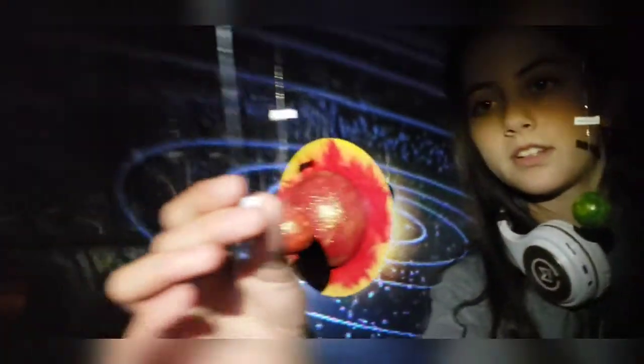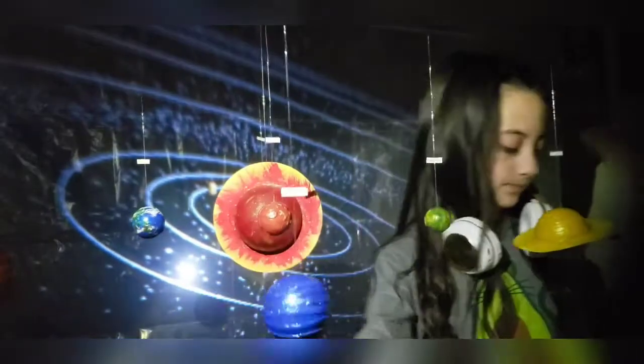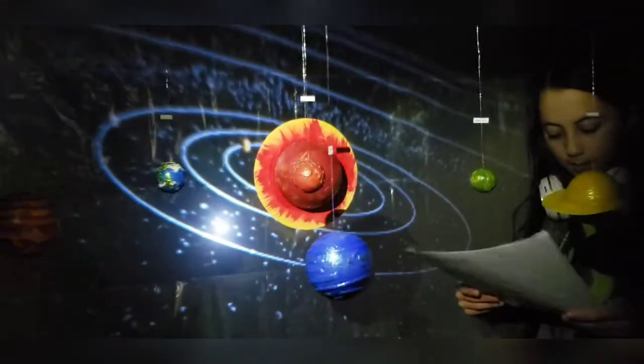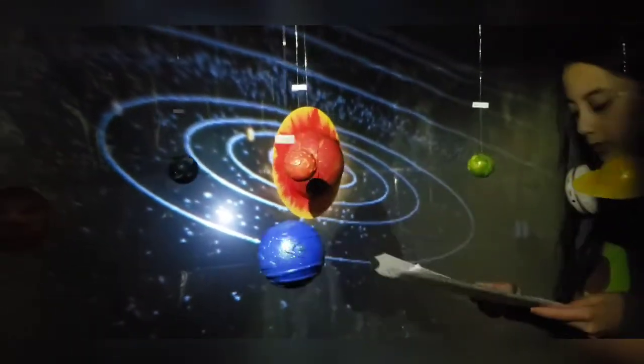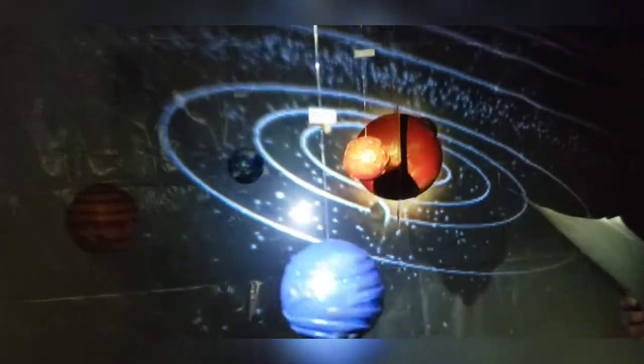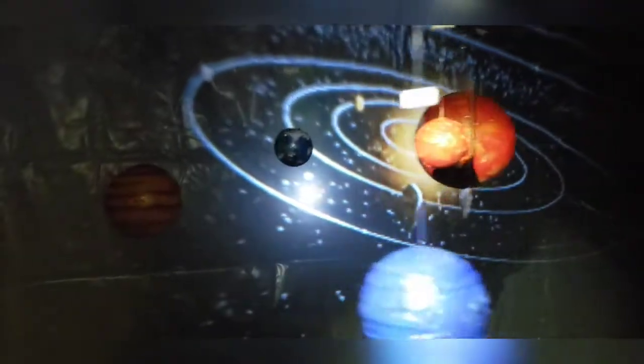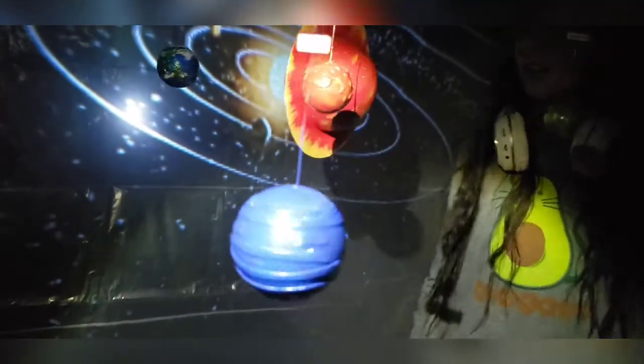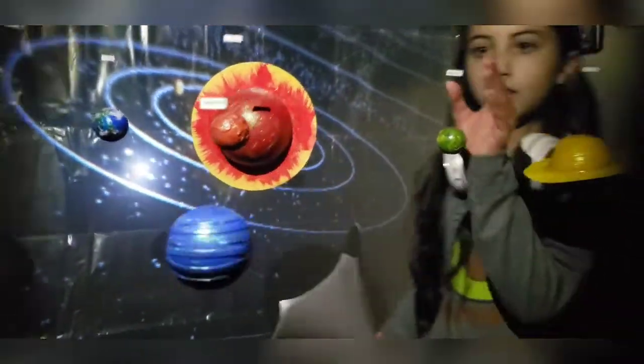And then, Neptune. Neptune is different shades of blue with a dark blue spot. It is 50,000 kilometers in diameter.